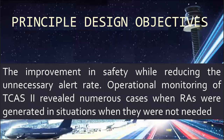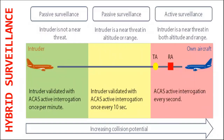TCAS II relies exclusively on interrogation mechanisms using transponders on board aircraft to determine the intruder's current and projected future position. Instead, ACAS-XA alerting logic is based upon a numeric lookup table. A hybrid surveillance method is used, working in two modes: active surveillance or passive surveillance. If an intruder is not close and will not be treated as a near-term threat, interrogation with that target will be done every minute. If an intruder is near threat in altitude or in range, the intruder will be validated every 10 seconds. If an intruder is near threat in both altitude and range, the intruder will be validated every second. The purpose of passive surveillance is to reduce the interrogation rate and utilize that to validate ADS-B data.